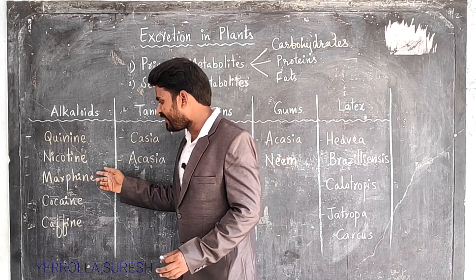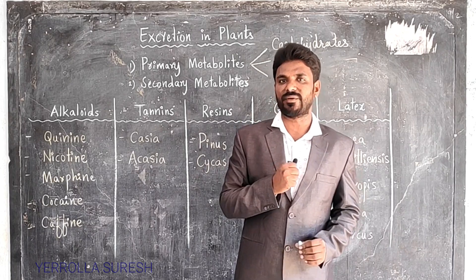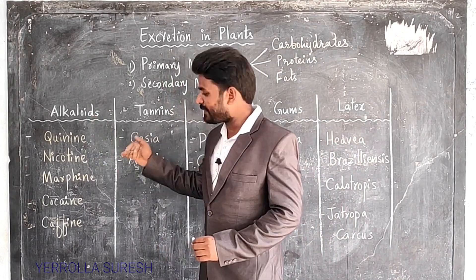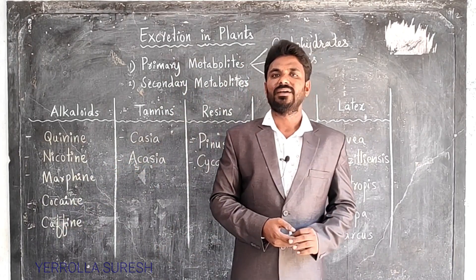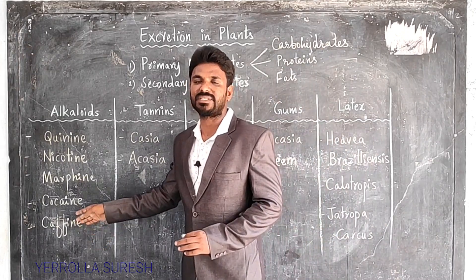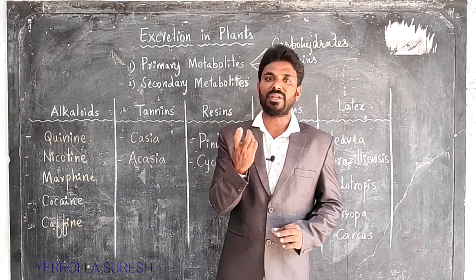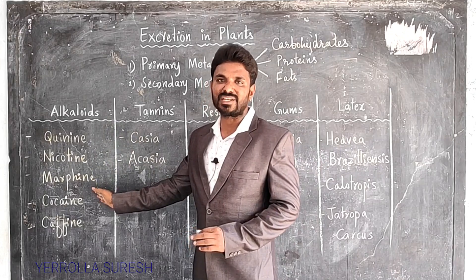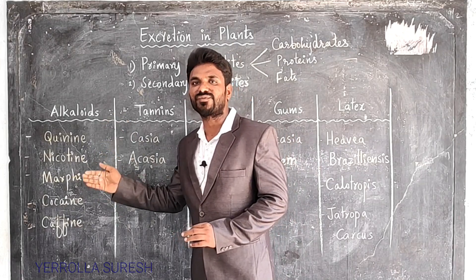Morphine and cocaine are produced from Papaver somniferum, the opium plant, and these two alkaloids are used as painkillers. Caffeine is an alkaloid developed from Coffea arabica plant, and it is used especially in coffee preparation and as a stimulant of the central nervous system. All these are waste materials to the plants, but human beings are utilizing them for different purposes.